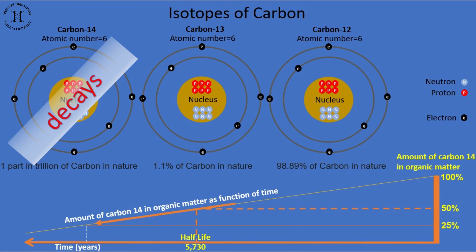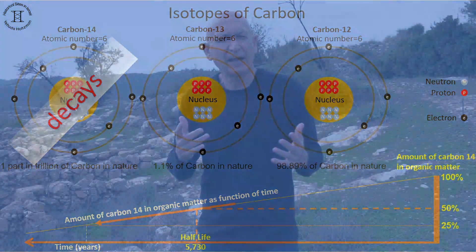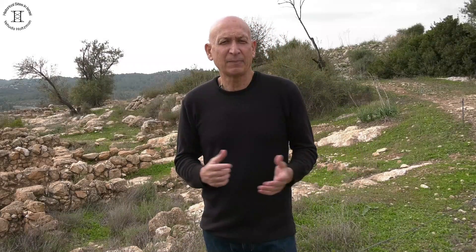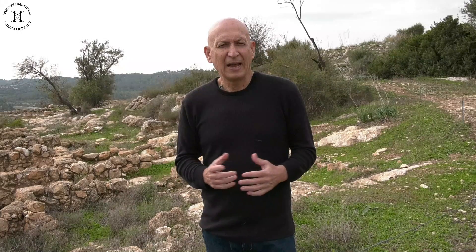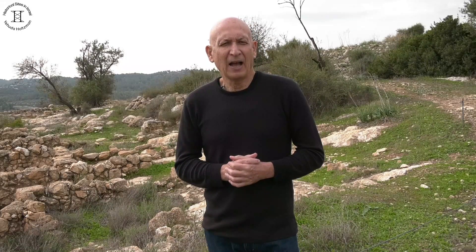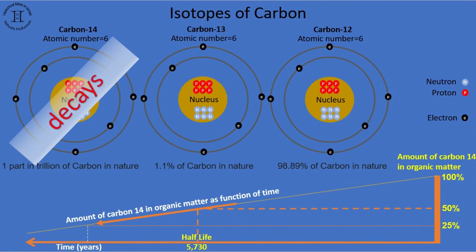For example, if in the atmosphere we expect to find that out of the total carbon isotopes, one part in 1 trillion is carbon-14 and 98.9% is carbon-12, and in the organic matter we find that there is only one part in 2 trillion of carbon-14, it means that half has decayed. So the age of the organic matter is 5,730 years, and so on.